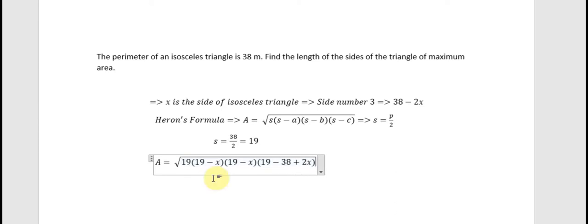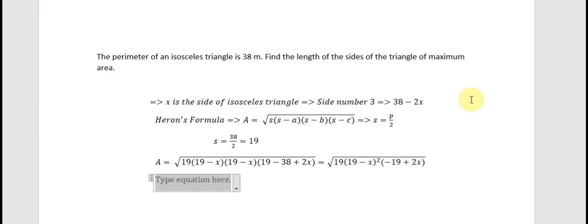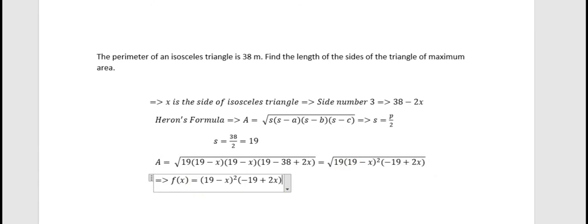Now we apply this number to find the maximum area. We just consider these two factors here only, so we choose the function accordingly. We care about this function with the variable so that we can calculate the maximum. We take the first derivative of (19 minus x) squared, which equals minus 2(19 minus x).